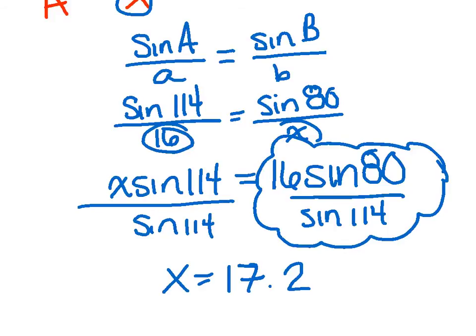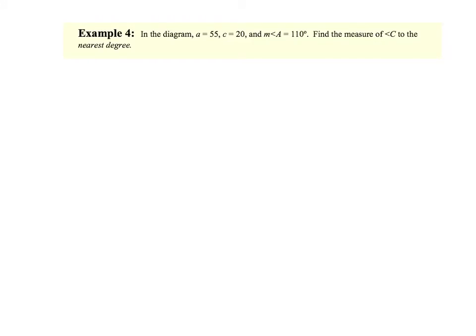All right, now we found two sides. Let's try an angle problem. In the diagram, A equals 55, C equals 20, and the measure of angle A equals 110. Find angle C to the nearest degree. So again, so far we've done two sides. We're going to find an angle now. So let's get our triangle ABC drawn.